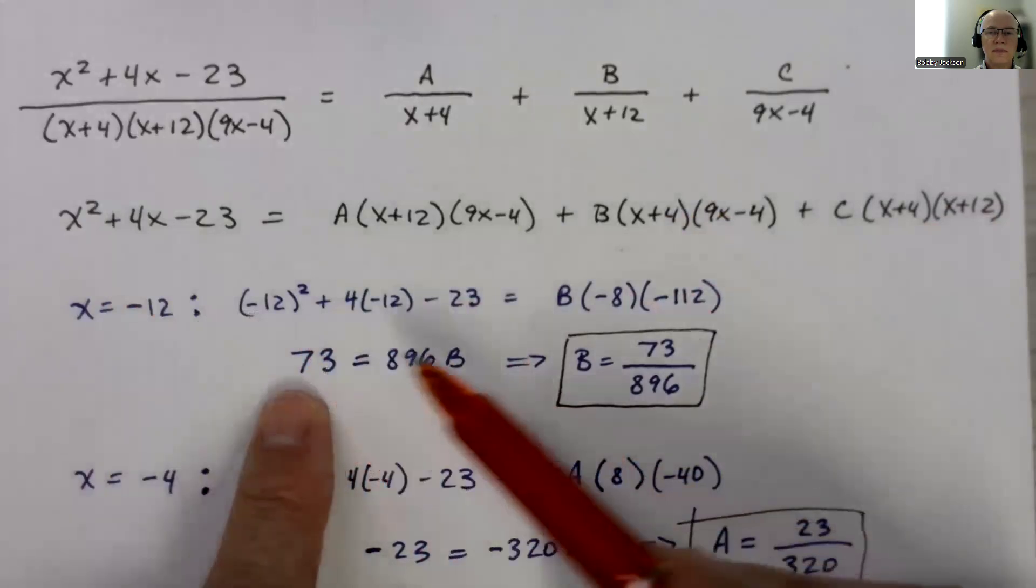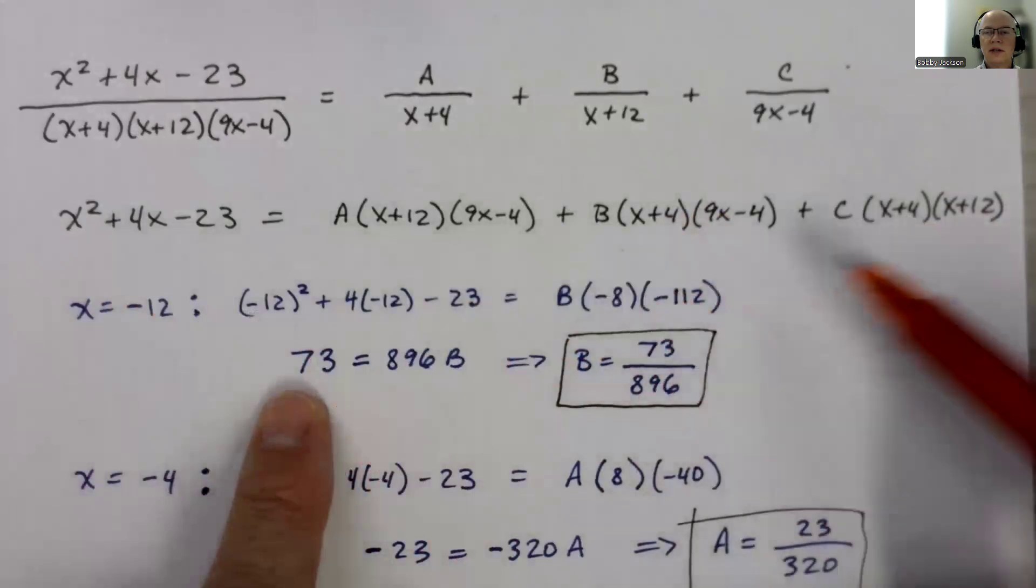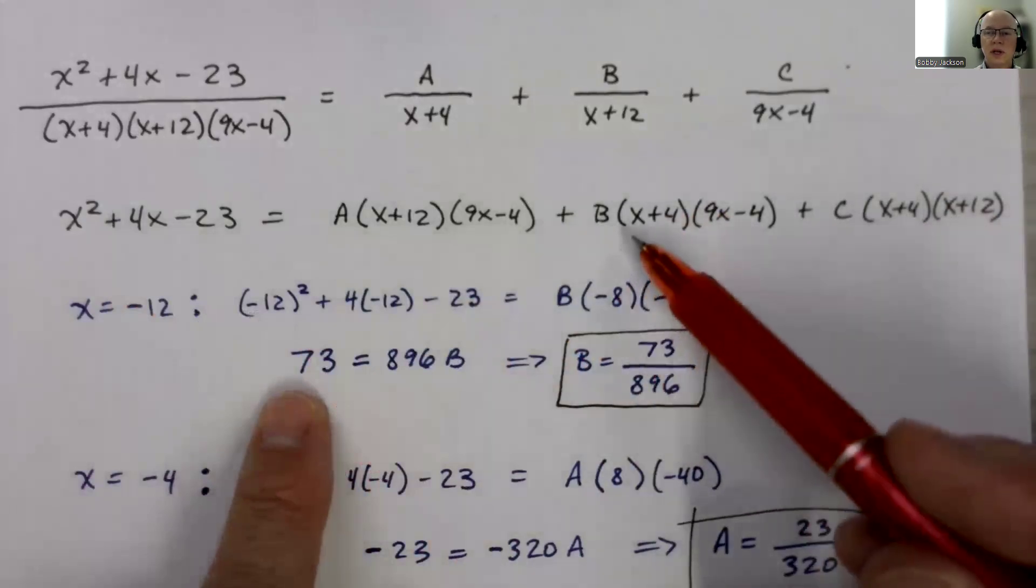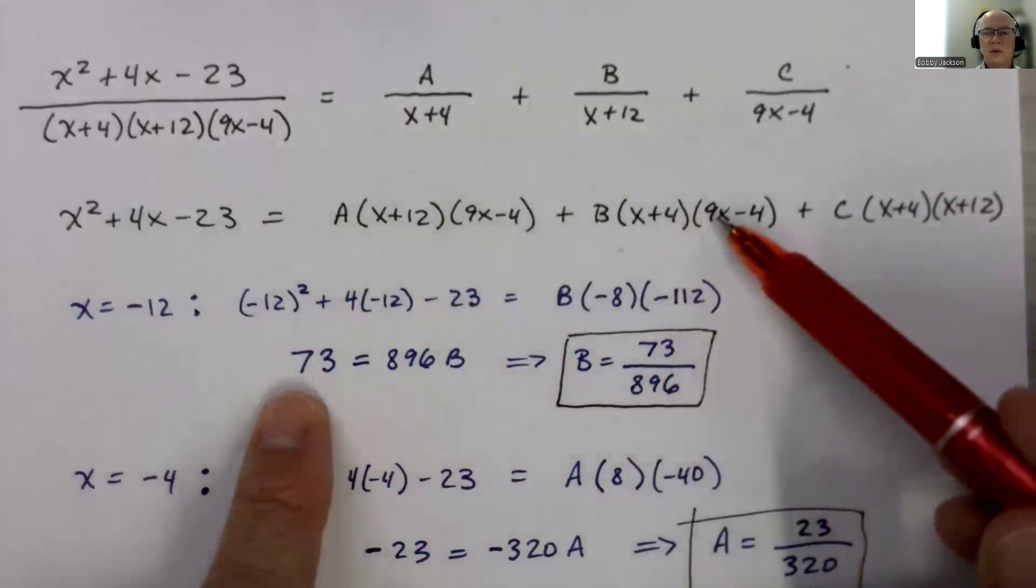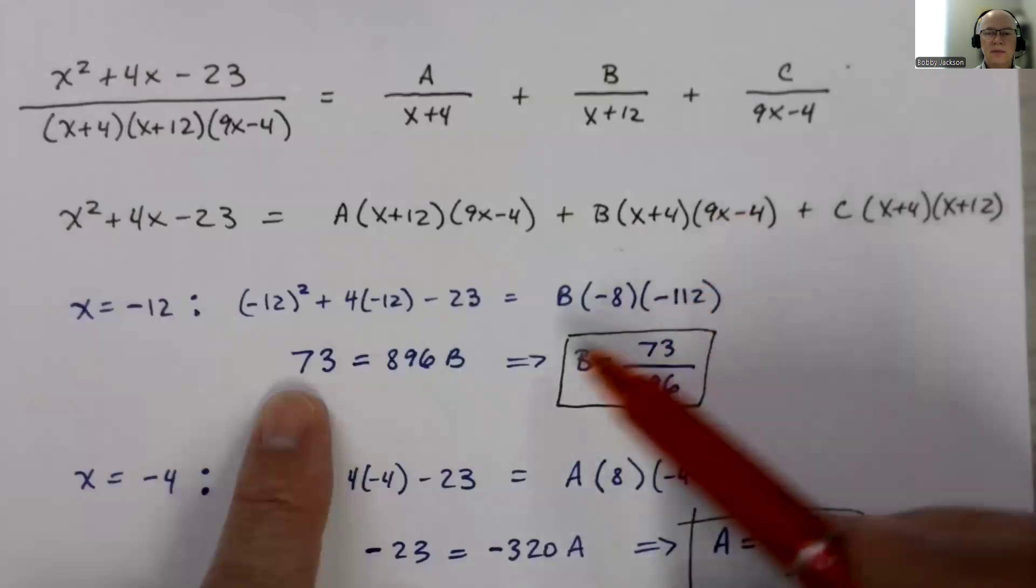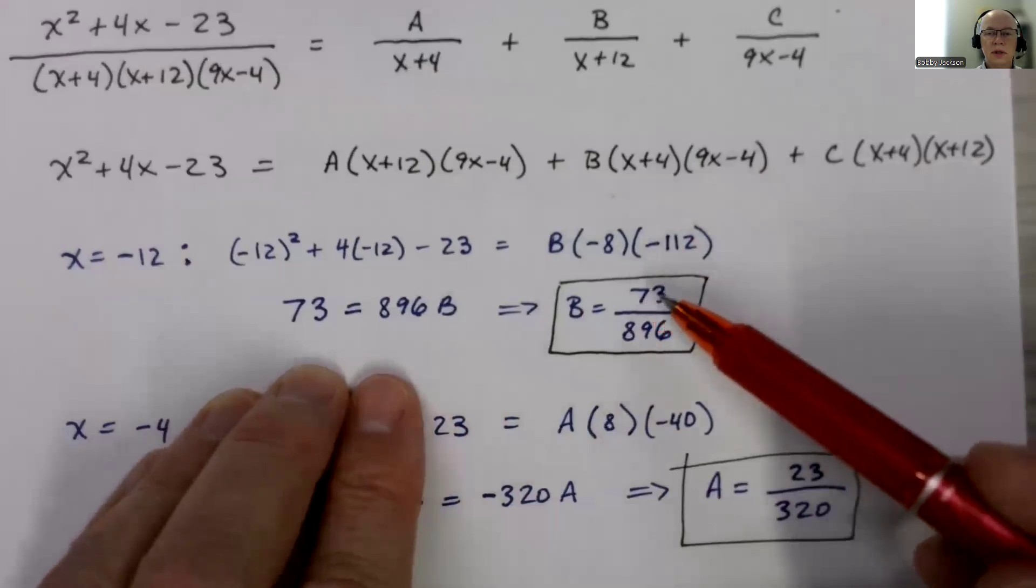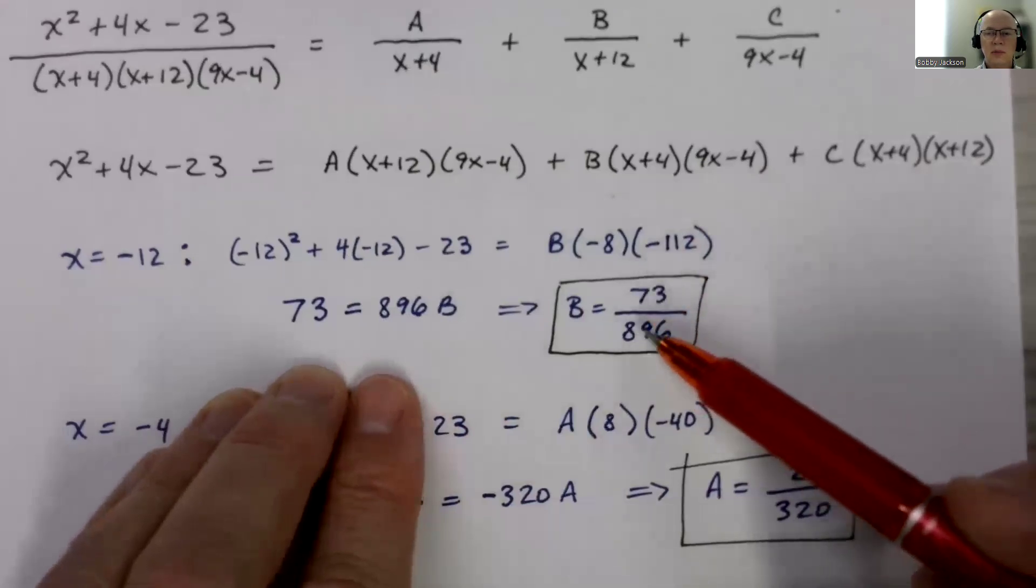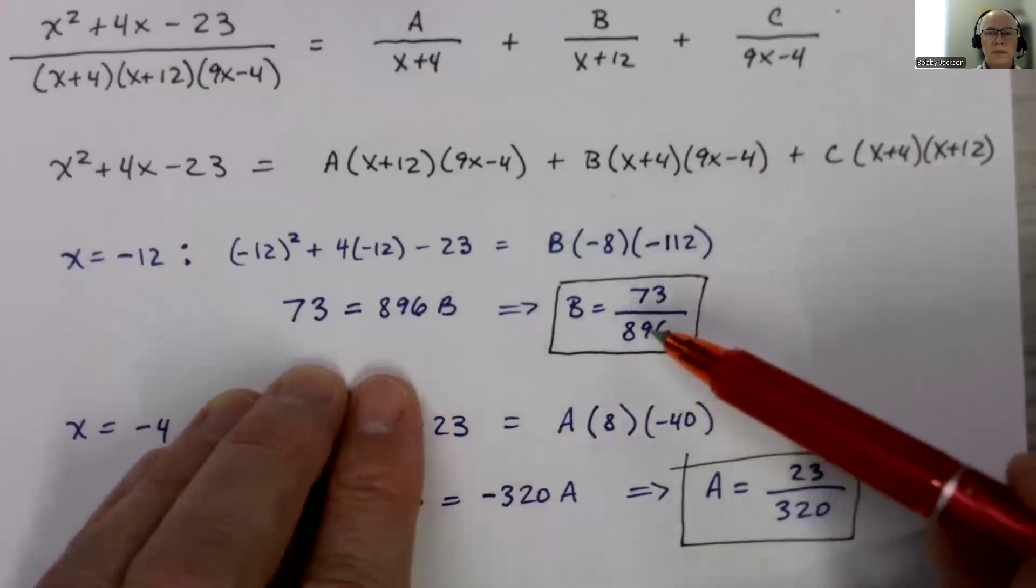Over here, I get negative 12 plus 4 is negative 8, and 9 times negative 12 is negative 108, minus 4 is negative 112. Multiply those together gives me positive 896. And so B is equal to 73 divided by 896. Unfortunately, that fraction has no common factors, and so it's a big, ugly mess, but that's what we get for B.